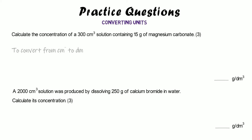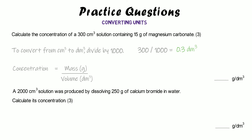For the first question, 300 cm³ divided by 1000 gives 0.3 dm³. Then mass divided by volume: 15 divided by 0.3 gives a concentration of 50 grams per decimetre cubed.